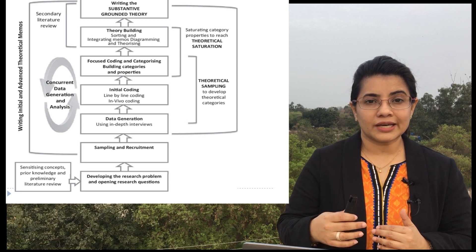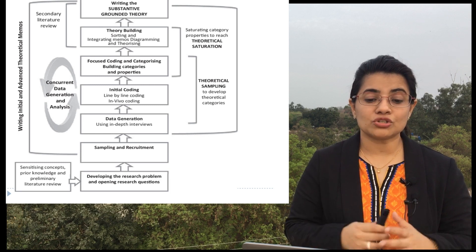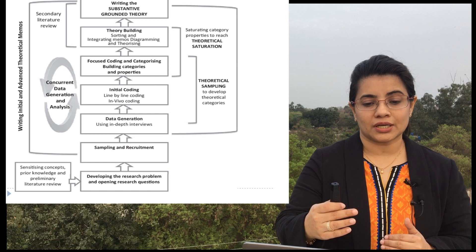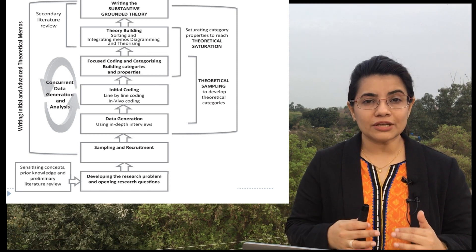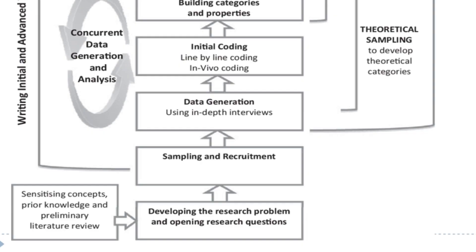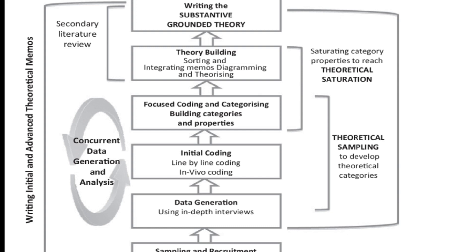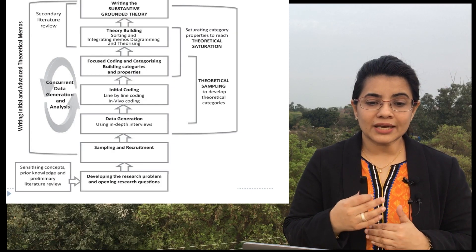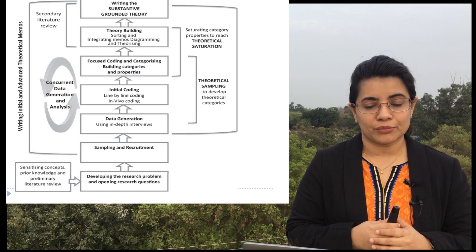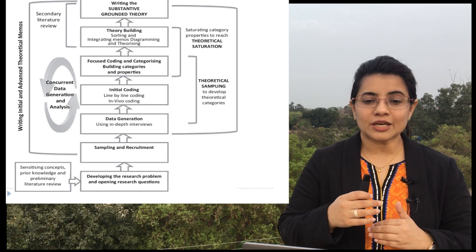This figure shows how you can collect qualitative data for grounded theory analysis and build theory from raw data. The first step is to develop your research aims and research questions, then select the sampling and recruitment of participants, then generate data through in-depth interviews or focus groups. Next comes initial coding, then focused coding and categorization — building categories and their properties, collecting similar categories together. The next step involves sorting and integrating memos, diagramming, and theorizing, where the theory-building step begins.